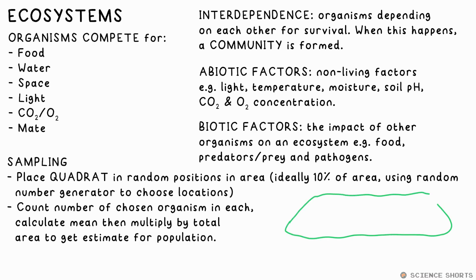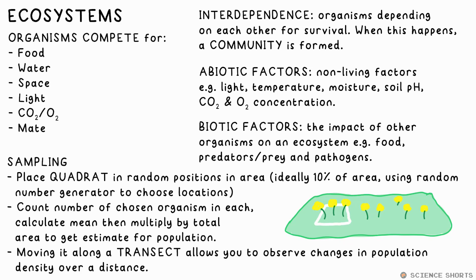We can use a quadrat to estimate the size of a population of an organism in an area by sampling say around 10% of the area, taking a mean and then multiplying up for the whole area. Using a quadrat with a transect allows us to observe how population distribution or density changes over a distance.